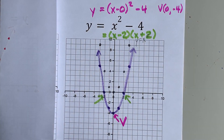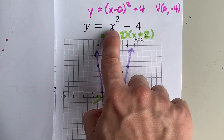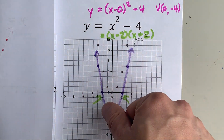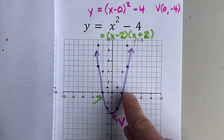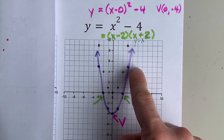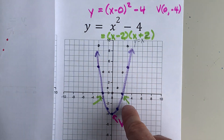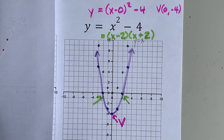Your final answer for the graph of x squared minus 4 is what I have in purple here. Be very careful about the specific points — like (3, 5), (2, 0), etc. Thanks for being with me and best of luck.